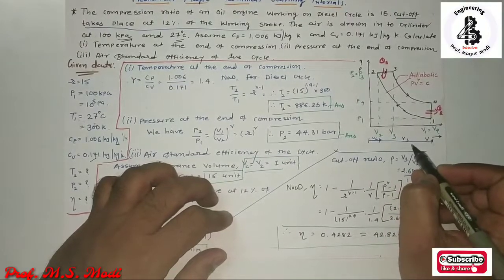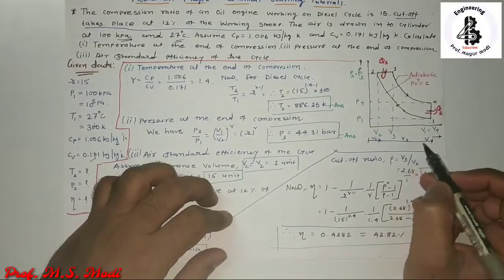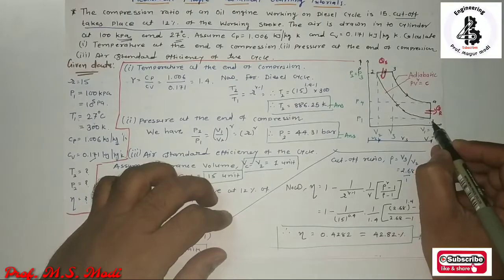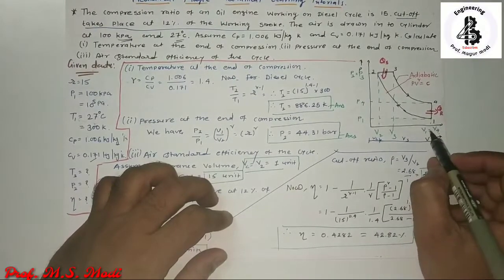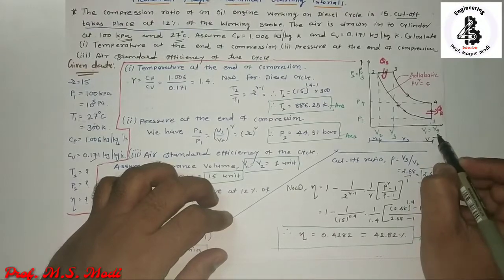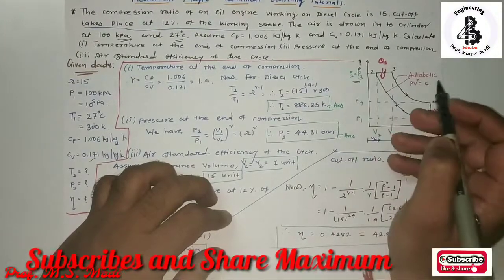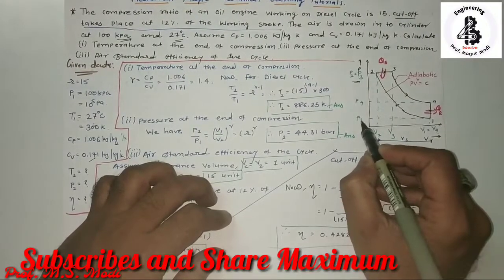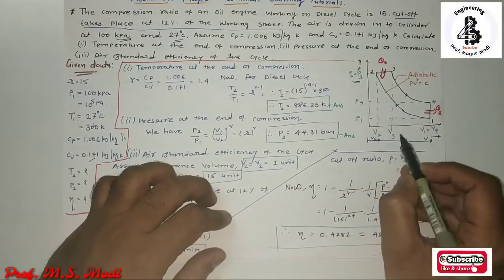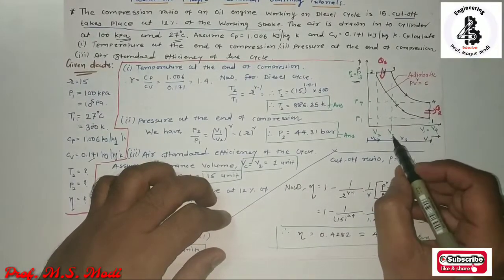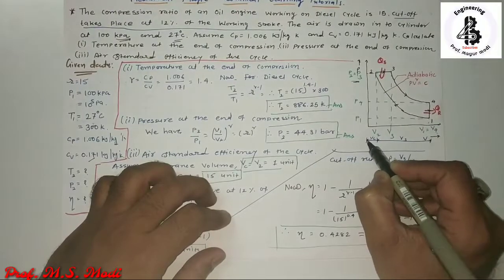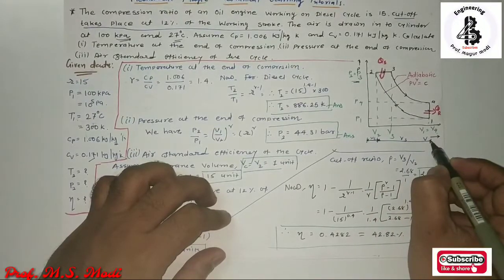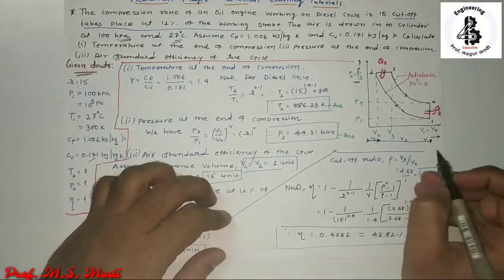Process 4 to 1 is the constant volume heat rejection process, completing the diesel cycle. At the constant volume process, V1 equals V4, and P2 equals P3. From the diesel cycle theory, V2 is called the clearance volume, and V2 to V1 — or V4 — represents the swept volume of the cycle.